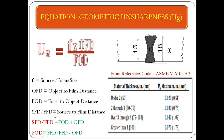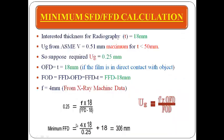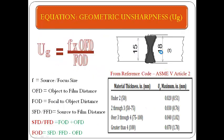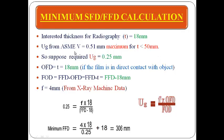SFD or FFD = FOD + OFD, so FOD = SFD (or FFD) − OFD. To calculate the minimum FFD, we must know the inspection thickness, which is 18 mm. From ASME 5, maximum UG = 0.51 mm for thickness less than 50 mm. We select a required UG of 0.25 mm.